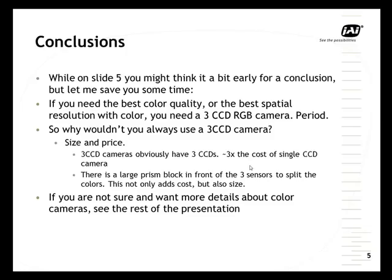We're only on slide five, but we can draw some quick conclusions. If you need the best color quality or the best spatial resolution, you need a three-CCD camera. So then why wouldn't you always use a three-CCD camera? Basically size and price. Three-CCD cameras obviously have three CCDs and a large prism block. Roughly, a three-CCD camera costs about the same as three monochrome cameras. The color prism block also adds to the size, as it is a fairly large piece of optics.